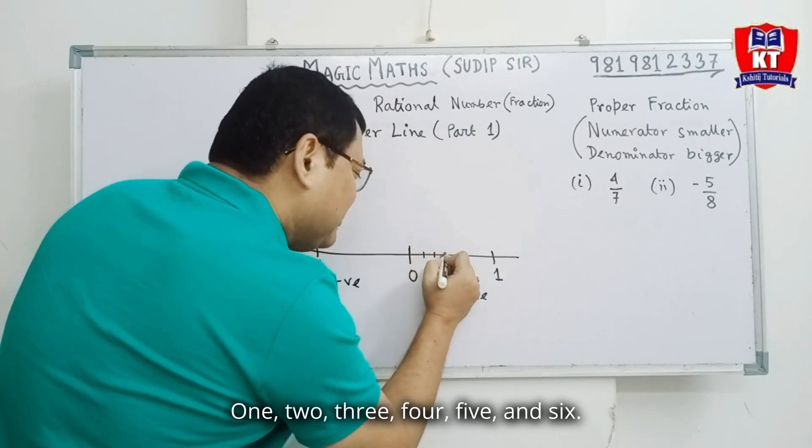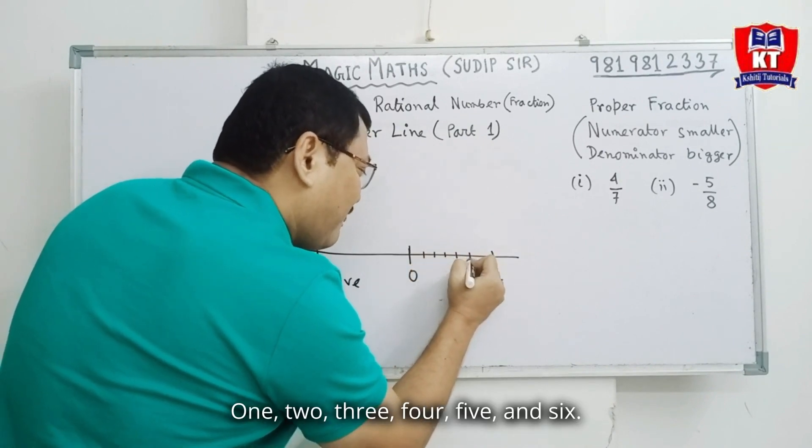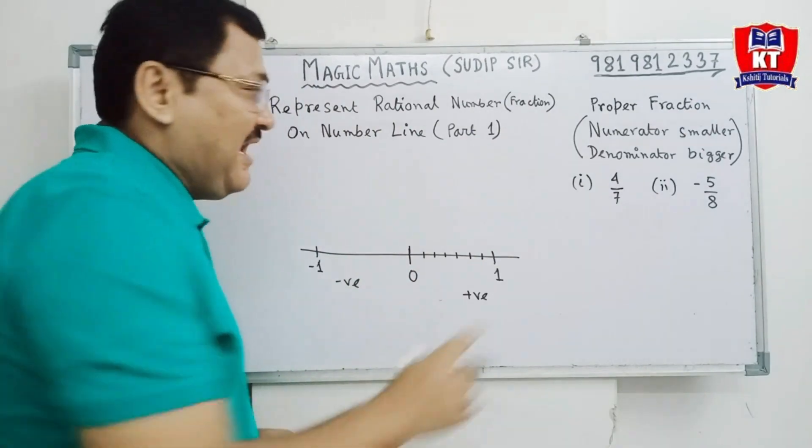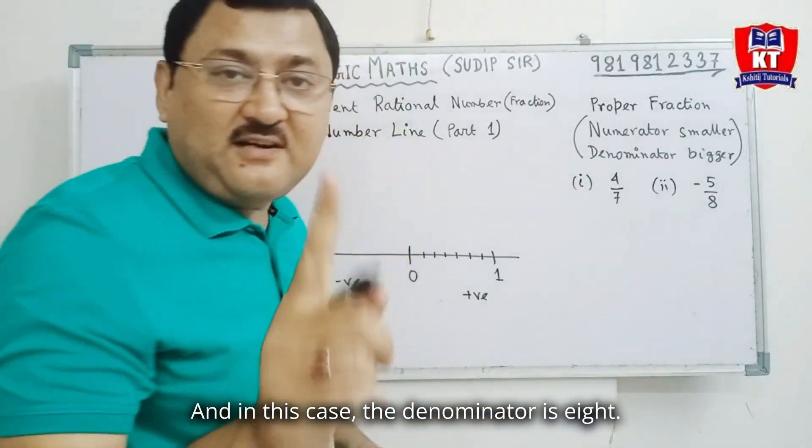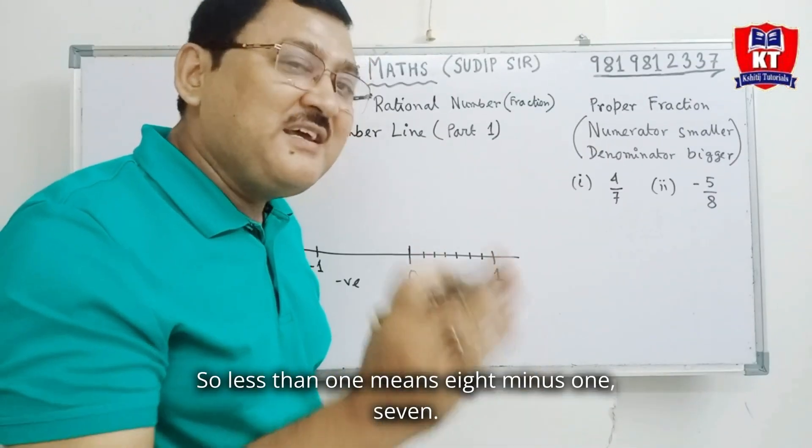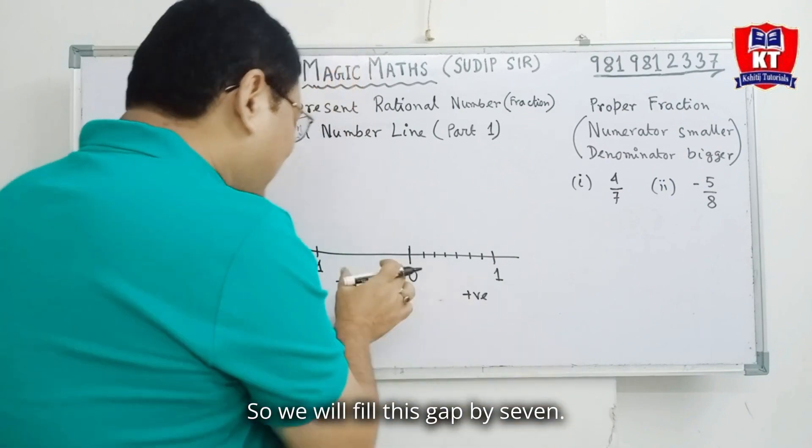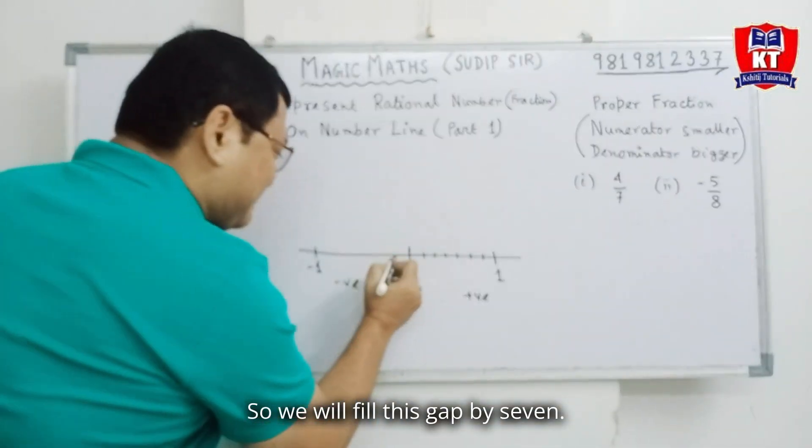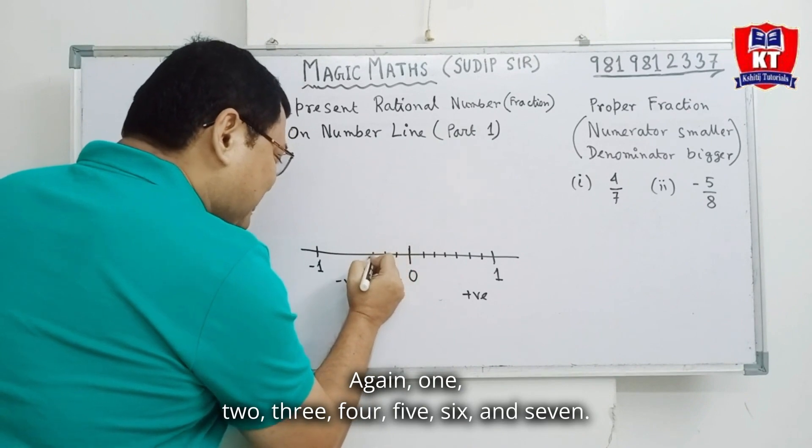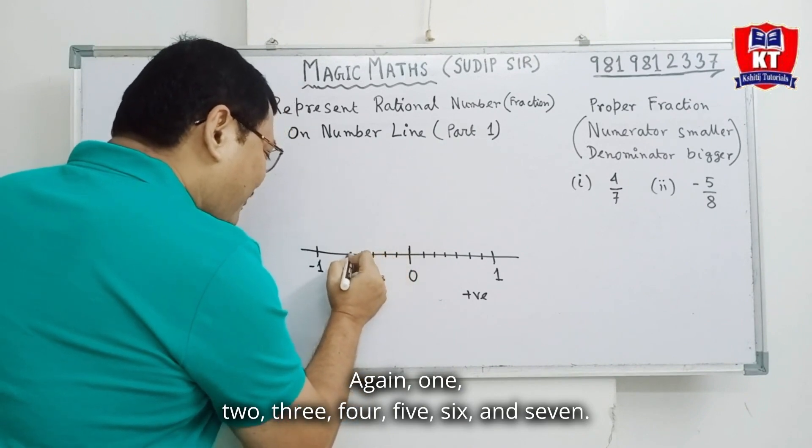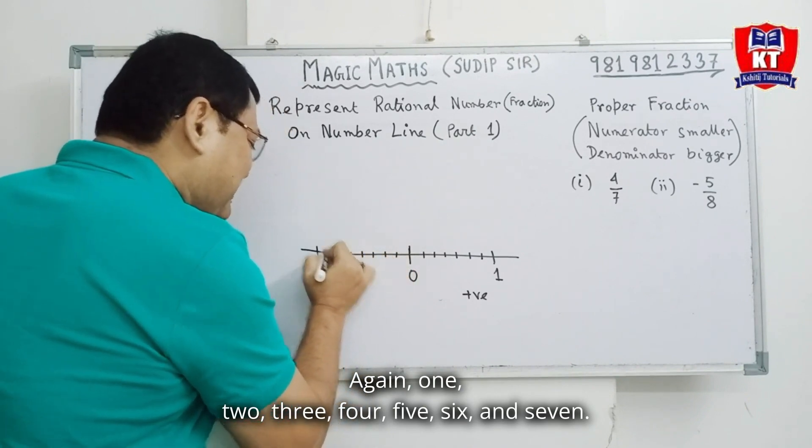1, 2, 3, 4, 5, 6. And in this case, the denominator is 8. So, less than 1 means 8 minus 1, 7. So, we will fill this gap by 7. Again, 1, 2, 3, 4, 5, 6, and 7.